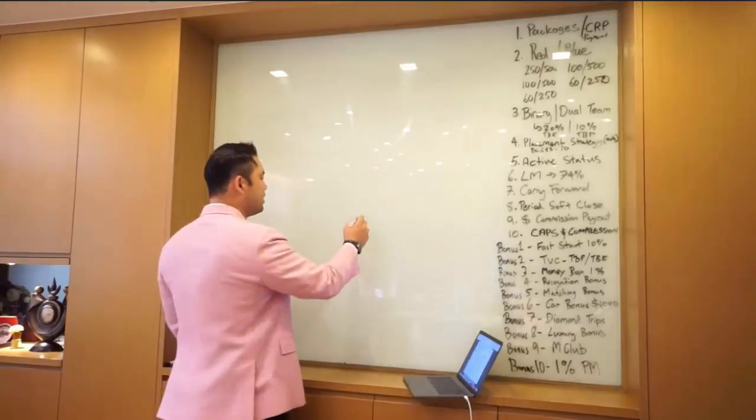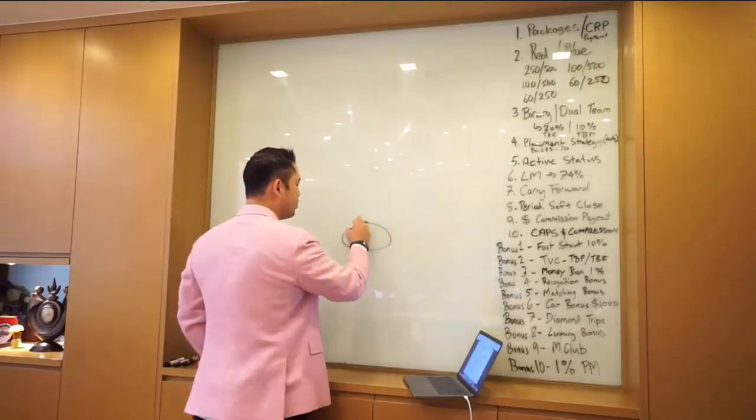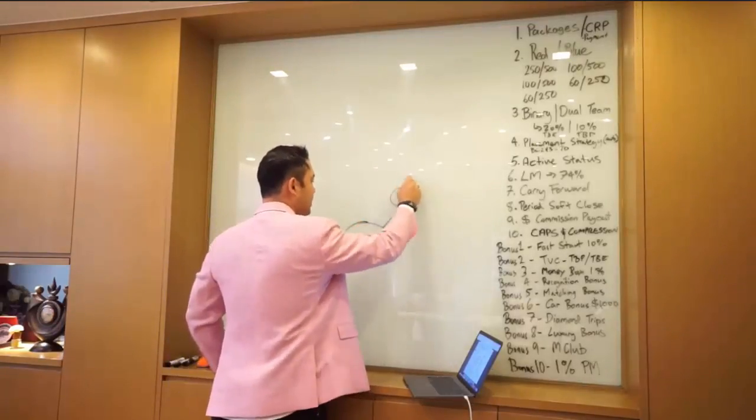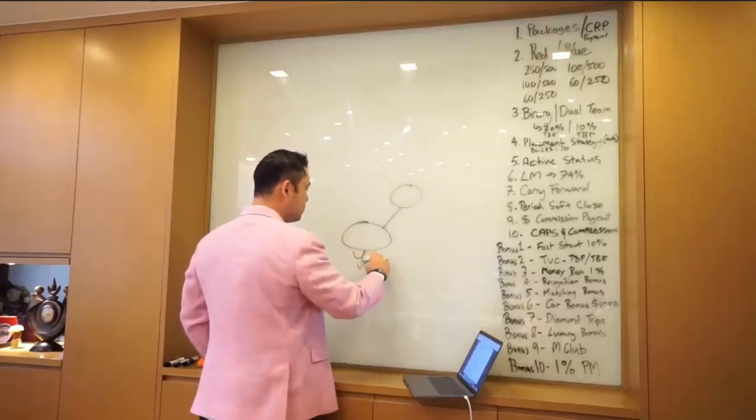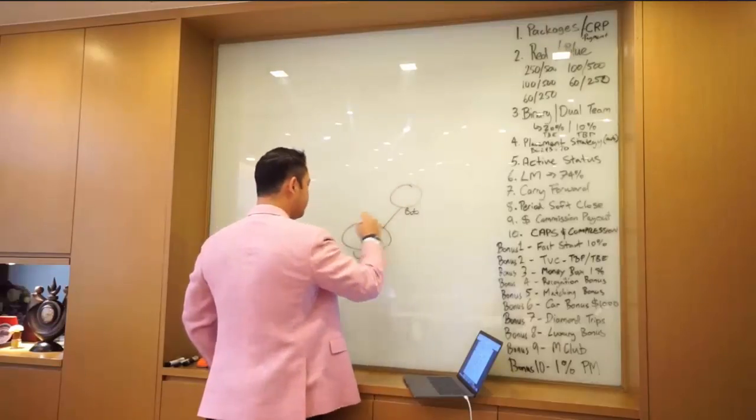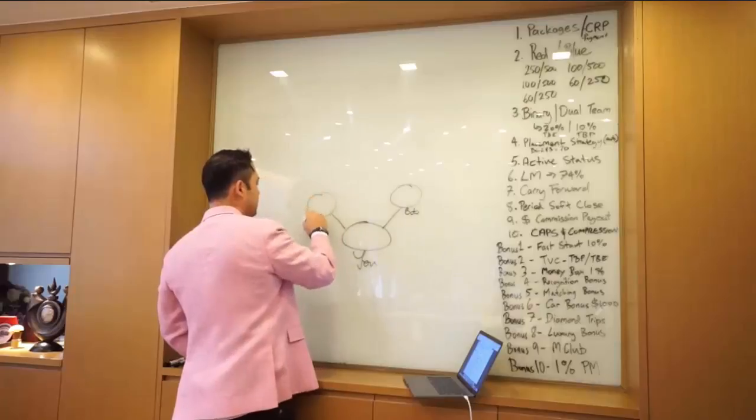But how do you visualize the three business centers? Well, everybody here, so let's say this is you, this is Bob, this is Sally.